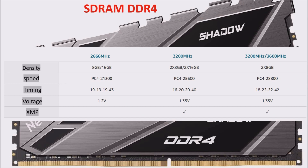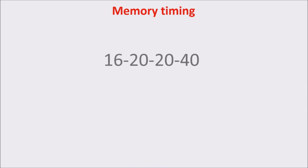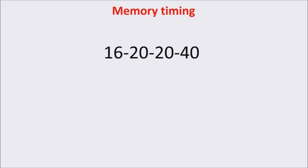Manufacturers also provide other information, typically less visible than frequency: four small numbers representing four time latencies related to specific operations of the RAM memory. Since memory chips require time to fully execute commands, manufacturers provide these four time latencies, which represent clock cycle units. For example, the first number represents 16 clock cycles, so lower numbers imply a shorter wait between commands.